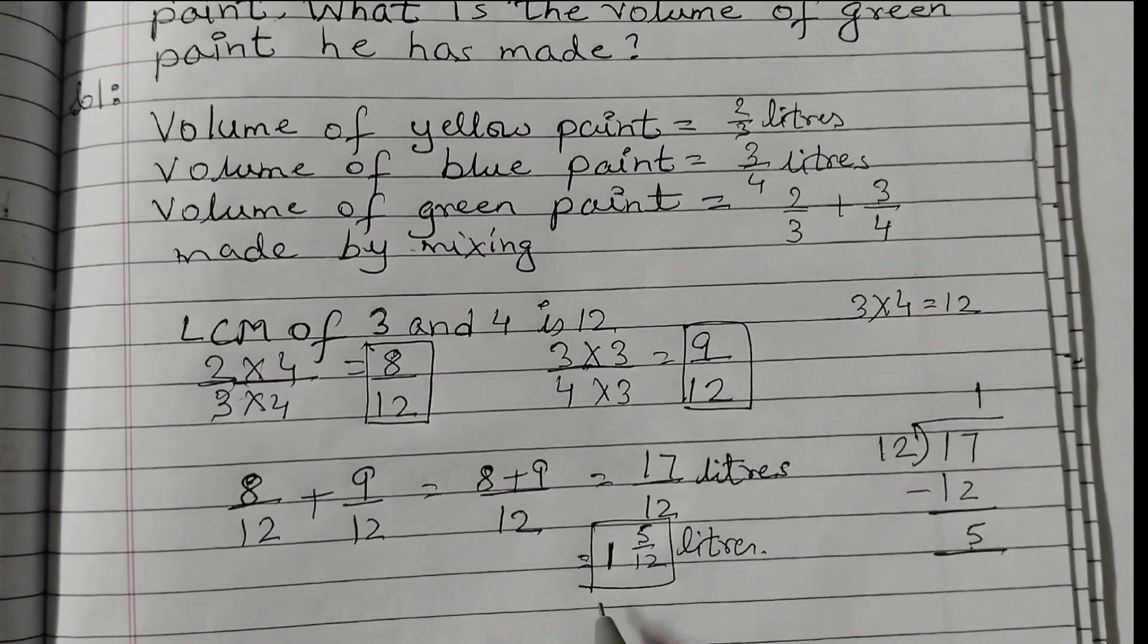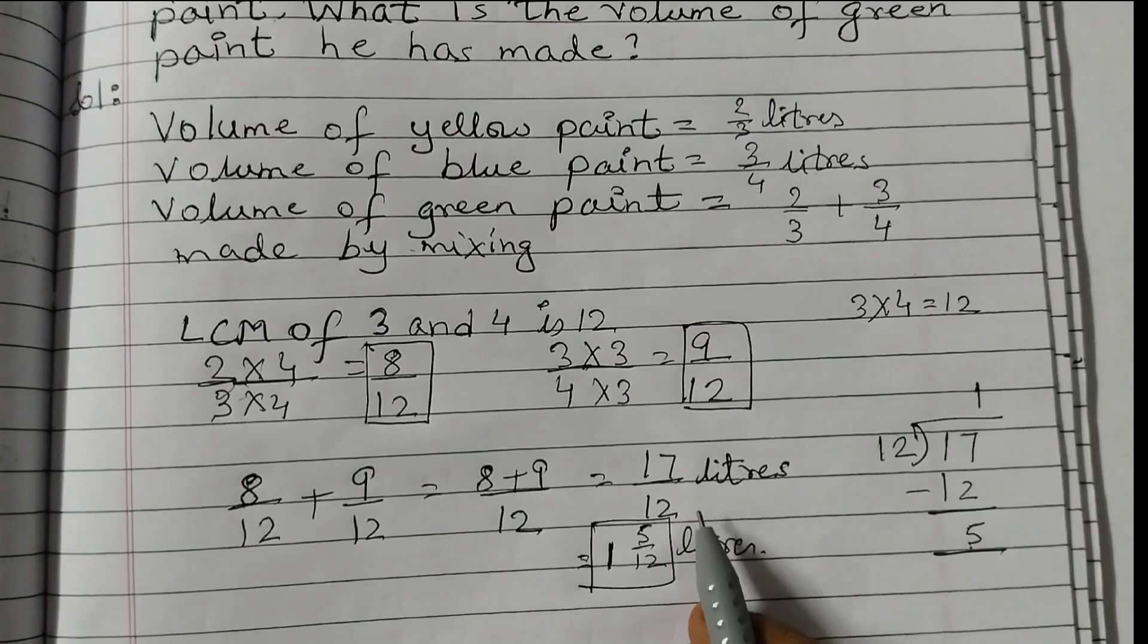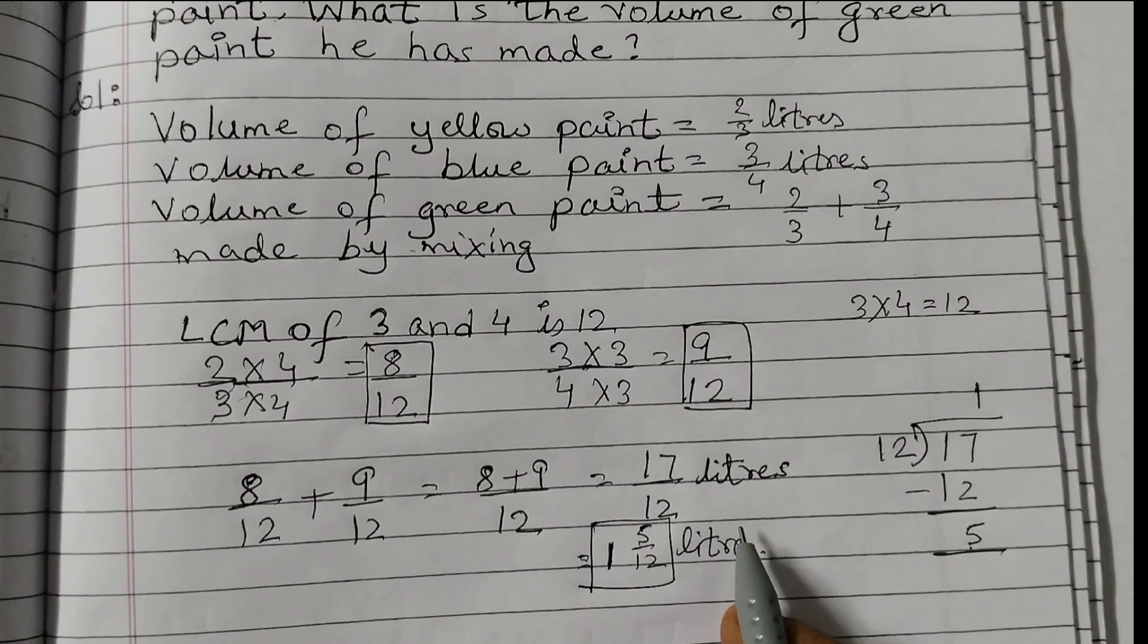This is your final answer: 1 5/12 liters as a mixed number, or 17/12 liters as an improper fraction. I hope the solution is clear. Thank you!